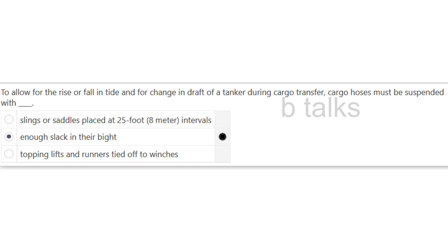To allow for the rise or fall in tide and for change in draft of a tanker during cargo transfer, cargo hoses must be suspended with: Slings or straps placed at 24-foot (8-meter) intervals; Enough slack in their bight; or Topping lifts and runners tied off to winches. Answer: Enough slack in their bight.